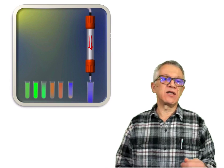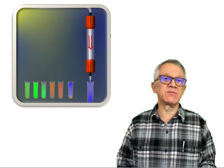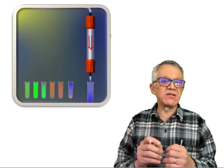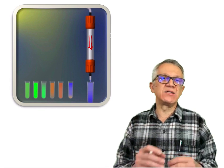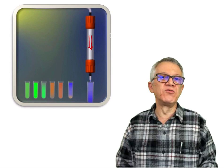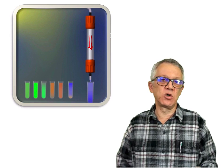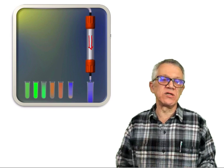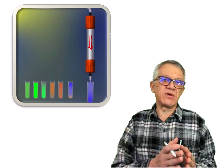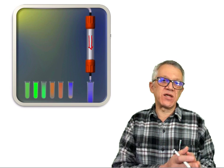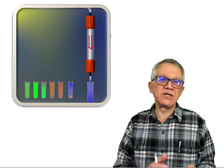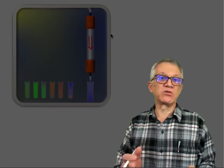The material that has the opposite charge of the column is going to bind to the column, and the ones that bind more tightly will reside in the column for longer — it will be more difficult to remove them. Those that bind loosely are removed more quickly. So we separate proteins that do not bind at all, proteins that bind weakly, and proteins that bind more tightly.